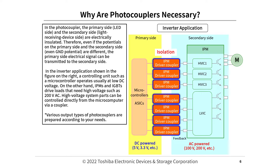Why are photocouplers necessary? In a photocoupler, the primary side (LED side) and the secondary side (light receiving device side) are electrically insulated. Therefore, even if the potentials on the primary and secondary sides — including ground potential — are different, the primary-side electrical signal can be transmitted to the secondary side. In inverter applications, a controlling unit such as a microcontroller operates at low DC voltage, while IPMs and IGBTs drive loads requiring high voltage such as 200V AC. High-voltage system parts can be controlled directly from the microcontroller via a photocoupler. Various output types of photocouplers are available according to your needs.